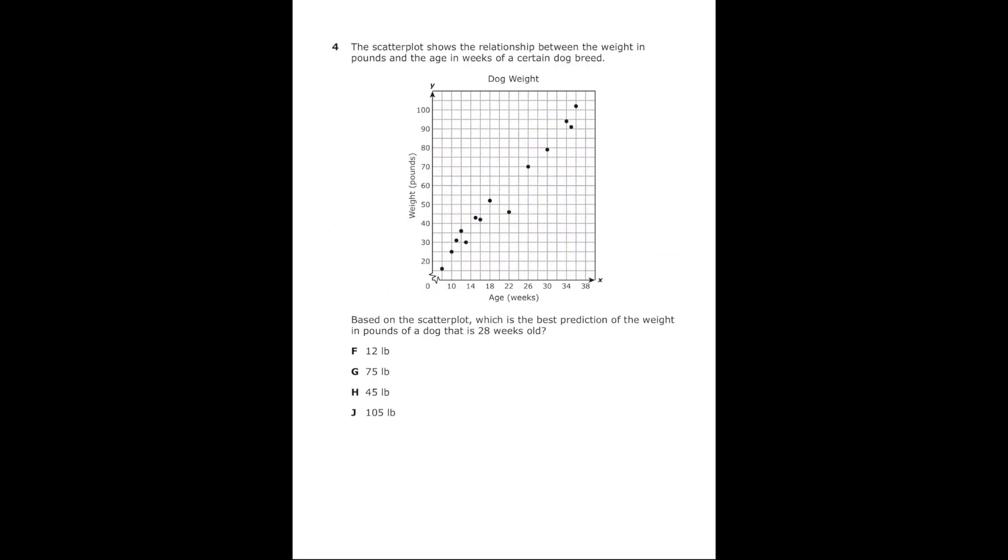This is number four from the 2022 eighth grade math STAR test. The scatter plot shows the relationship between the weight in pounds and the age in weeks of a certain dog breed. Based on the scatter plot which is the best prediction of the weight in pounds of a dog that is 28 weeks old. So I'm trying to make a prediction based on the scatter plot so I'm just going to take what they give us.